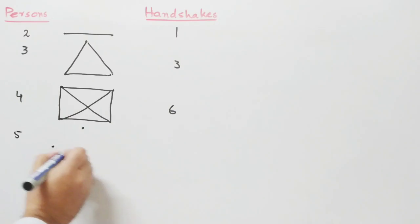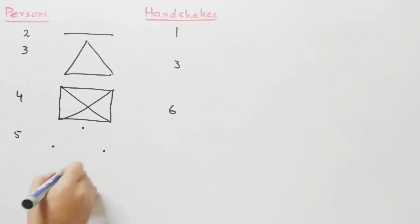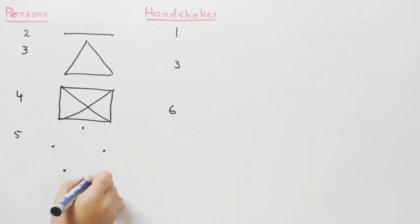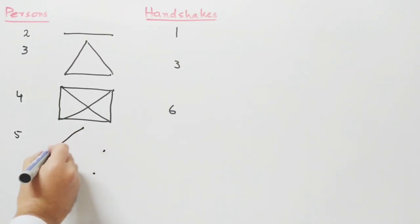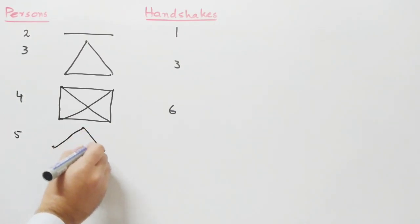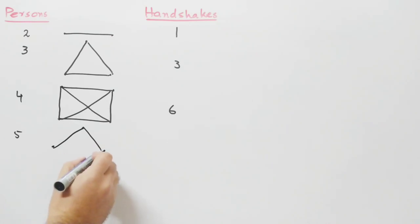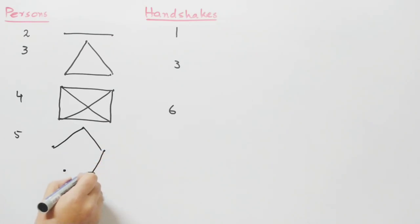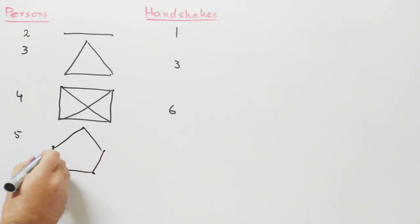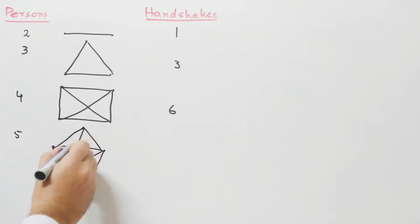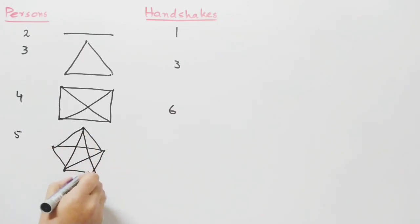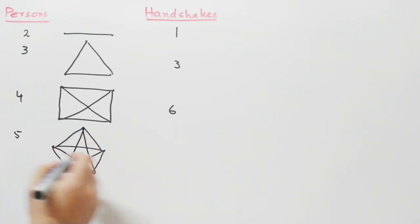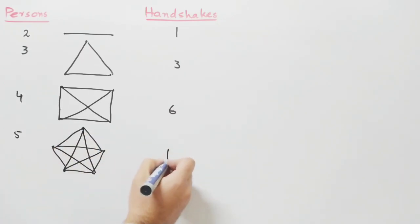Now if we have five persons, counting all handshakes: one, two, three, four, five, six, seven, eight, nine, ten. So there are ten handshakes.